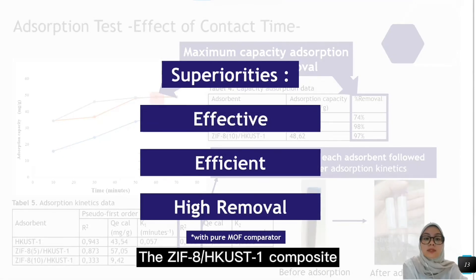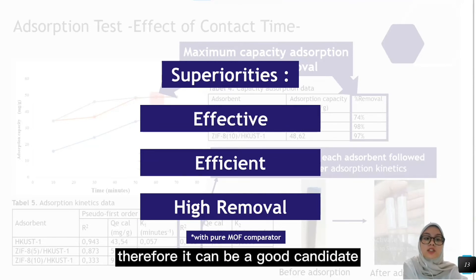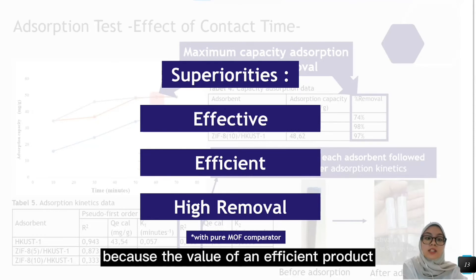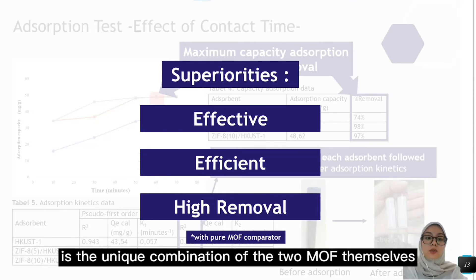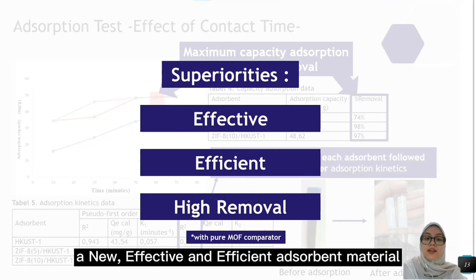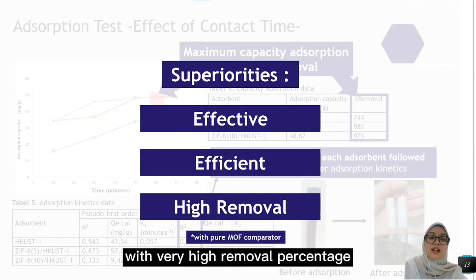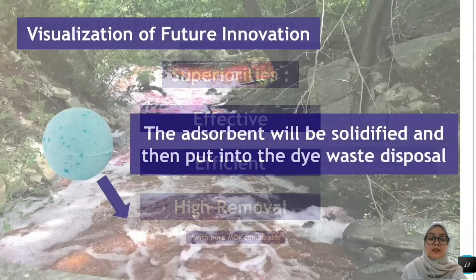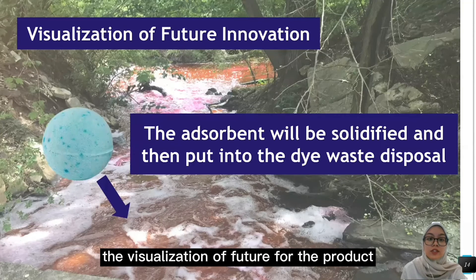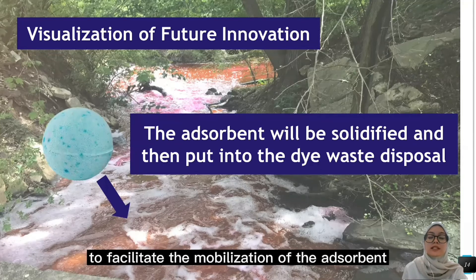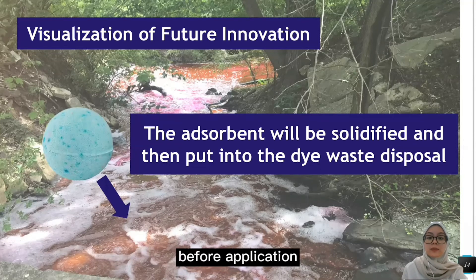The ZIF-8/HCAS-1 composite, therefore, can be a good candidate for industrial waste management, because the value of the composite is the unique combination of the two MOFs themselves, making it a new, effective, and efficient absorbent material with very high removal percentage improvement when compared to pure MOFs. The vision for the product is to be commercialized in the form of compacted powder to facilitate the mobilization of the absorbent before application.